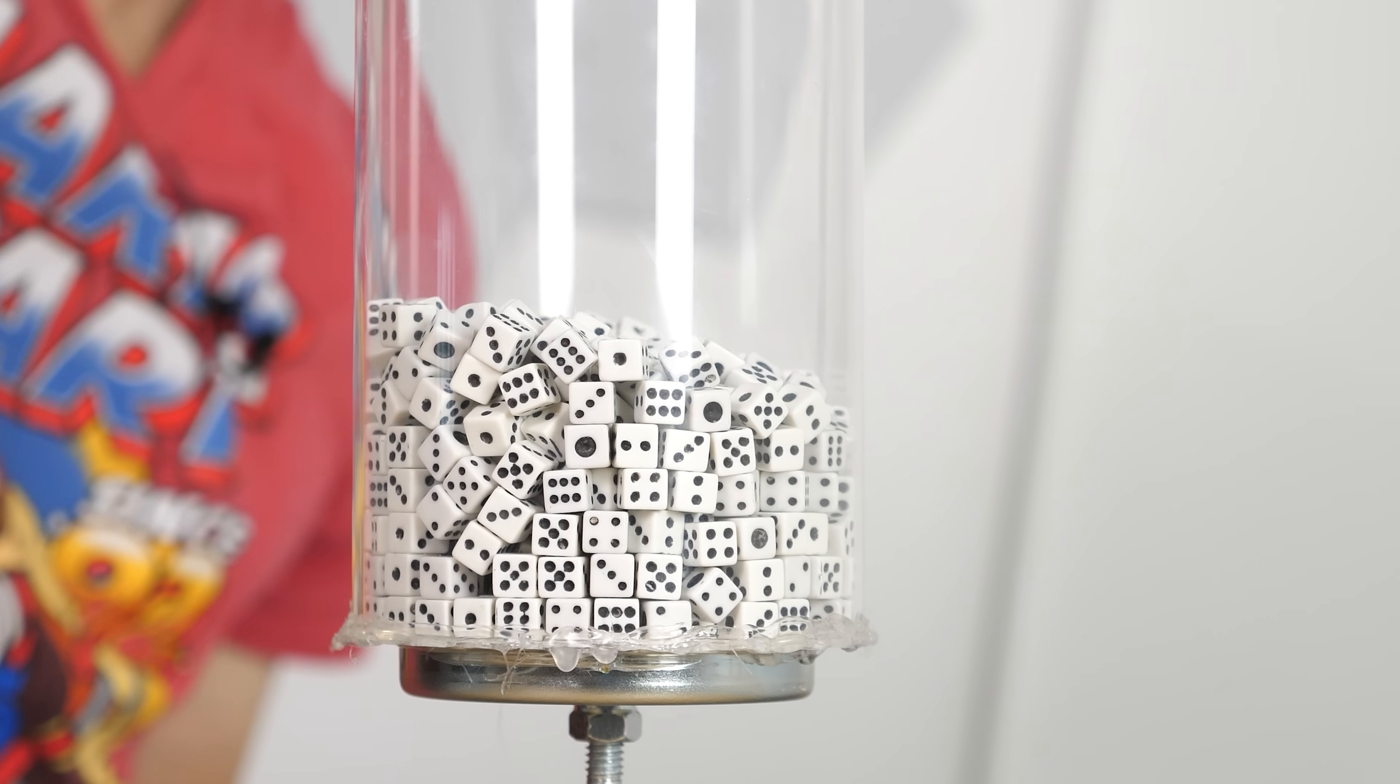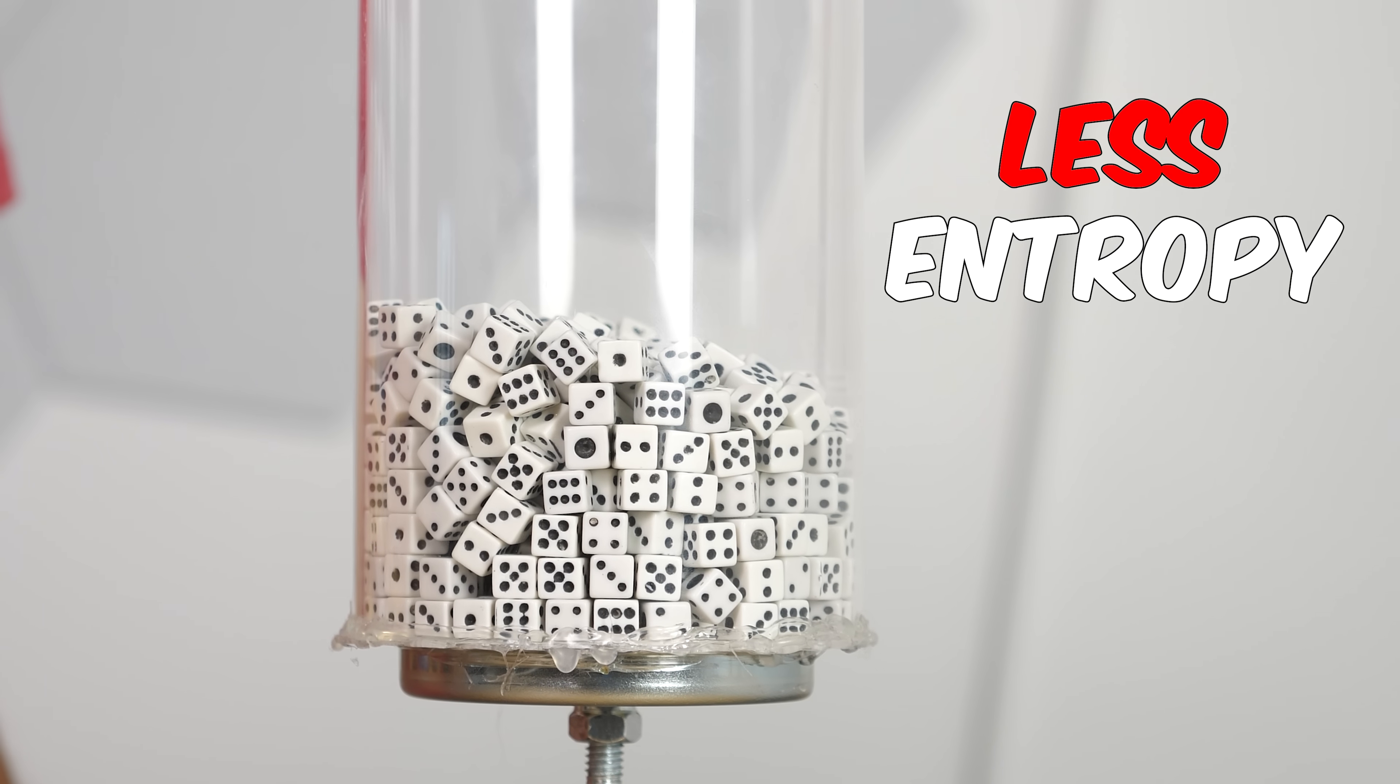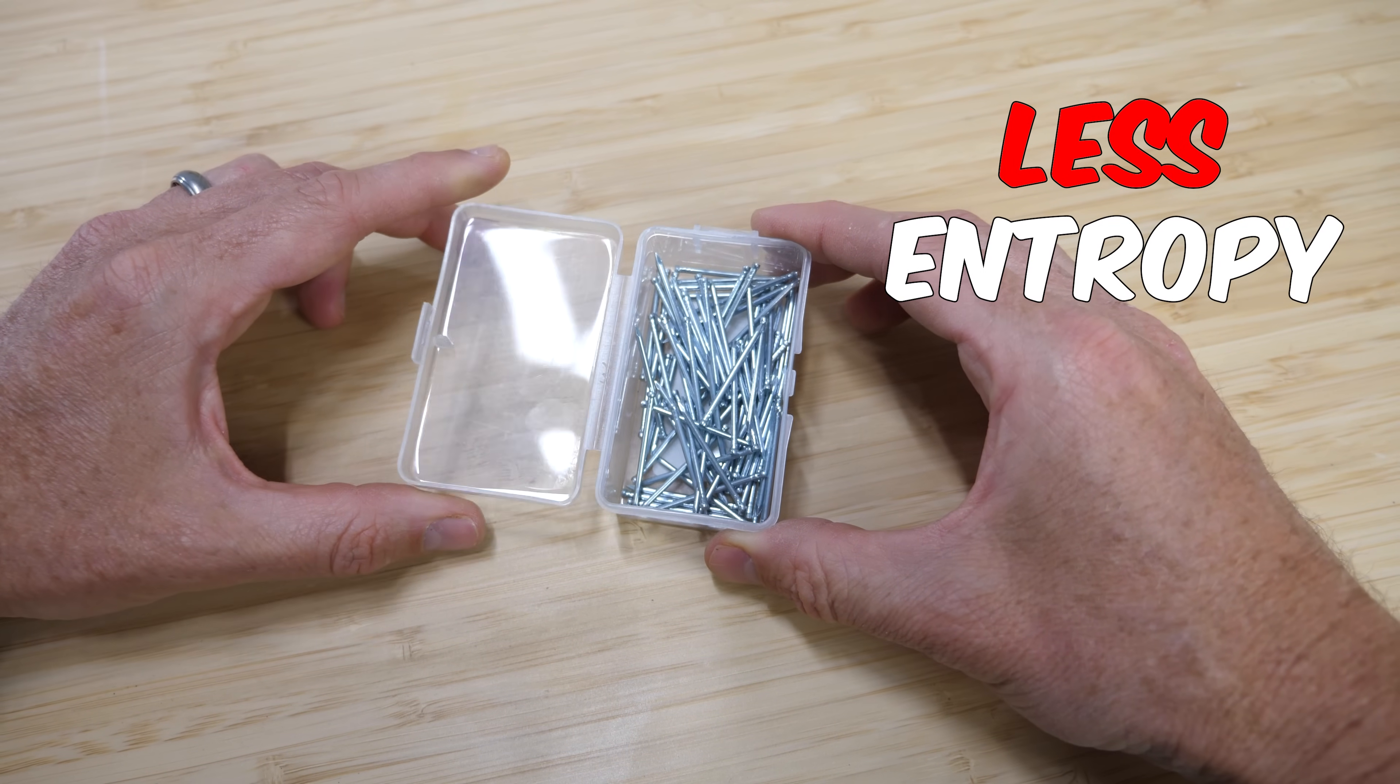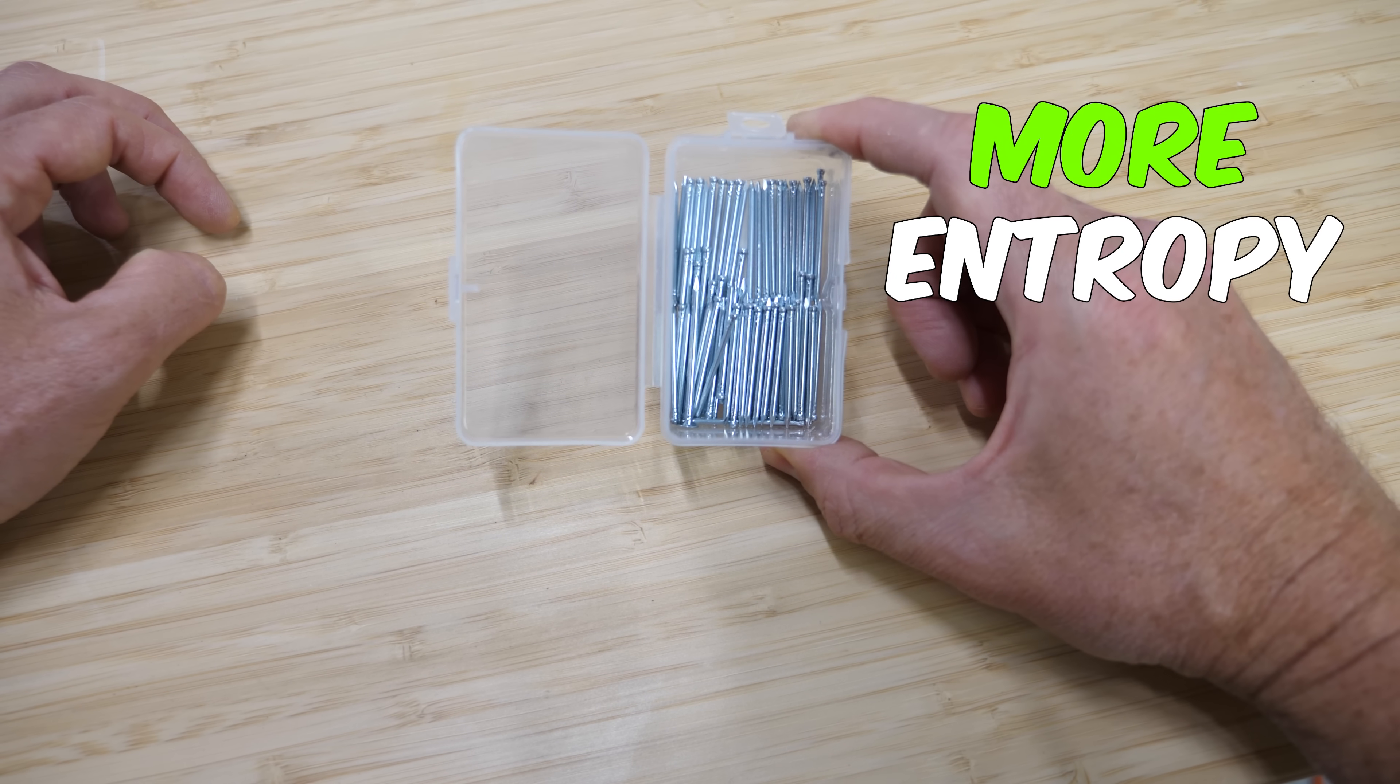Entropy is not disorder. For example, this beaker of dice has less entropy than this beaker of dice. And this box of nails has less entropy than this box of nails.